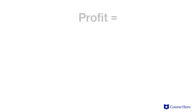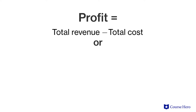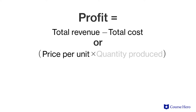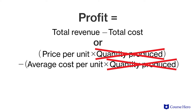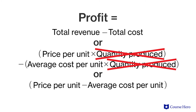The equivalency of these two ways of conceptualizing and calculating profit and loss can be stated as: profit equals total revenues minus total costs. Or, we could rewrite the total equations as profit equals price per unit times quantity produced minus average cost per unit times quantity produced. Because both terms share quantity produced, we can factor it out and rewrite the profit equation as price per unit minus average cost per unit, multiplied by quantity produced.